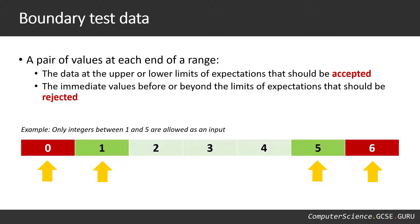Boundary test data is the pair of values at each end of the range. The data at the upper and lower limits that should be accepted are some of your values, and then the immediate values just beyond these limits — which should be rejected — are the others. In our example, one and five are at the boundaries of what's acceptable. We test zero and one together, and five and six together. We expect one to be accepted and zero rejected; five to be accepted and six rejected.